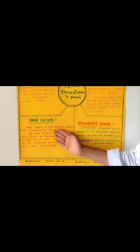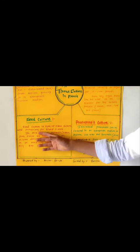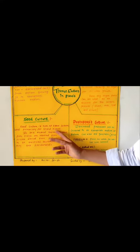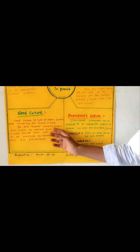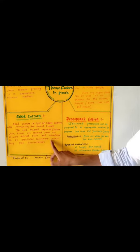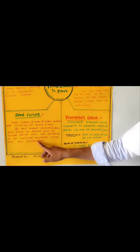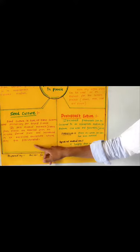Now, seed culture. Seed culture is a type of tissue culture used primarily for orchid plants. In this method, explants, that is tissue from the plants, are obtained from an in vitro derived plant and introduced in the artificial environment where they get proliferated.